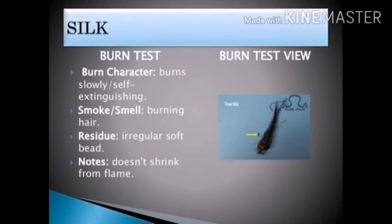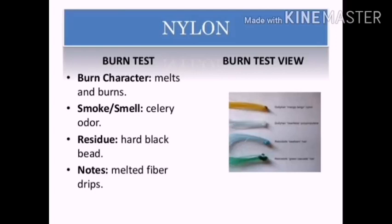Silk burns poorly without giving out a strong flame. Its burn character is slow burning or self-extinguishing, with a smell of burning hair. When burned, silk leaves an irregular soft bead, and it does not shrink from the flame. Nylon is a type of synthetic fibre — its burn character is that it melts and burns slowly with a smell like celery. The residue is a hard black bead.